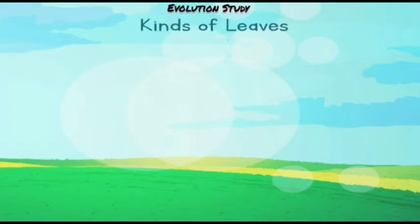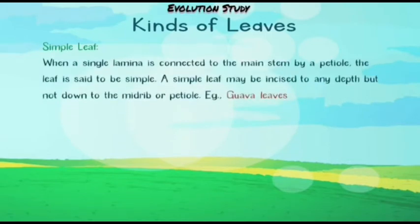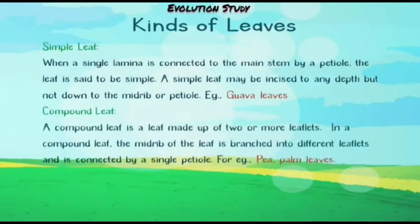Now what are the kinds of leaves? The first is the simple leaf. When a single lamina is connected to the main stem by a petiole, the leaf is said to be simple. A simple leaf may be incised to any depth but not down to the midrib or the petiole.